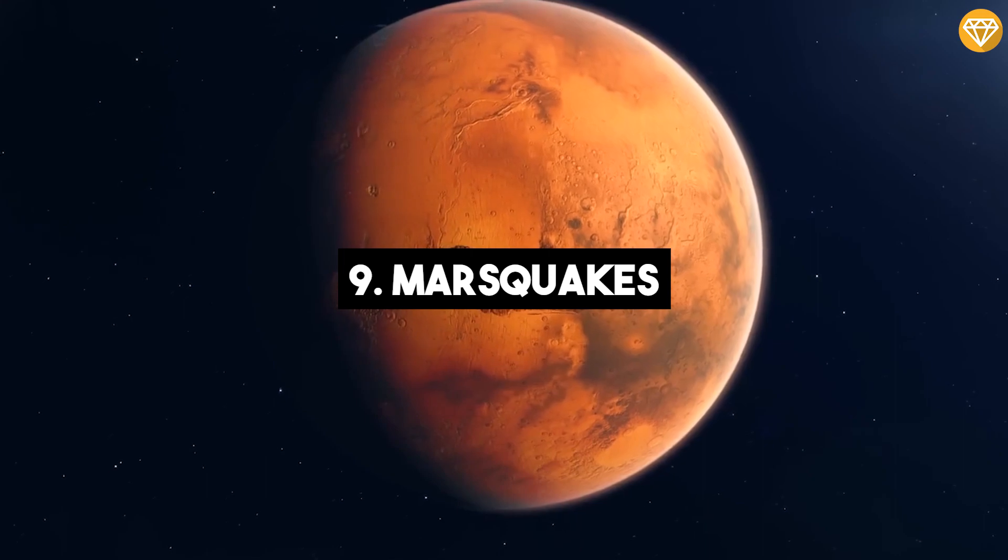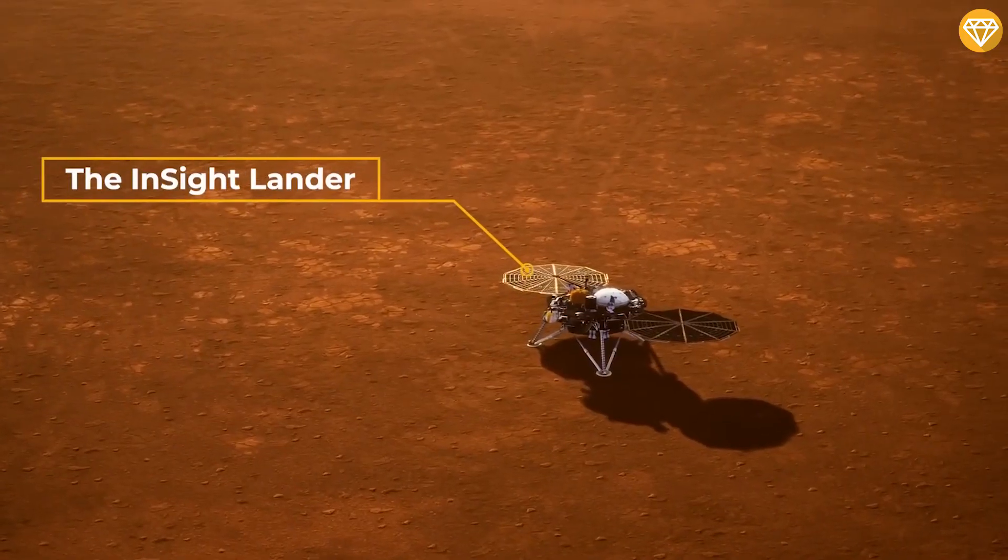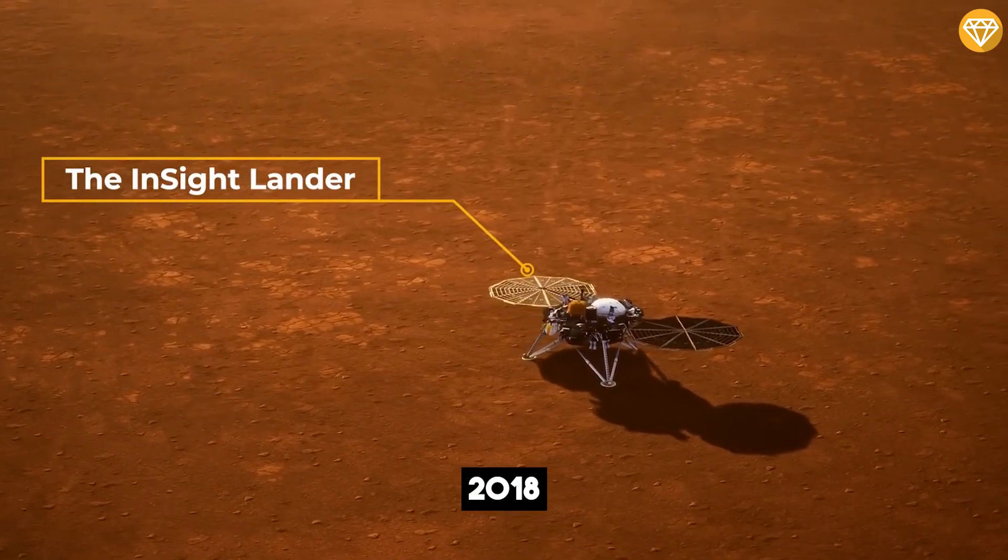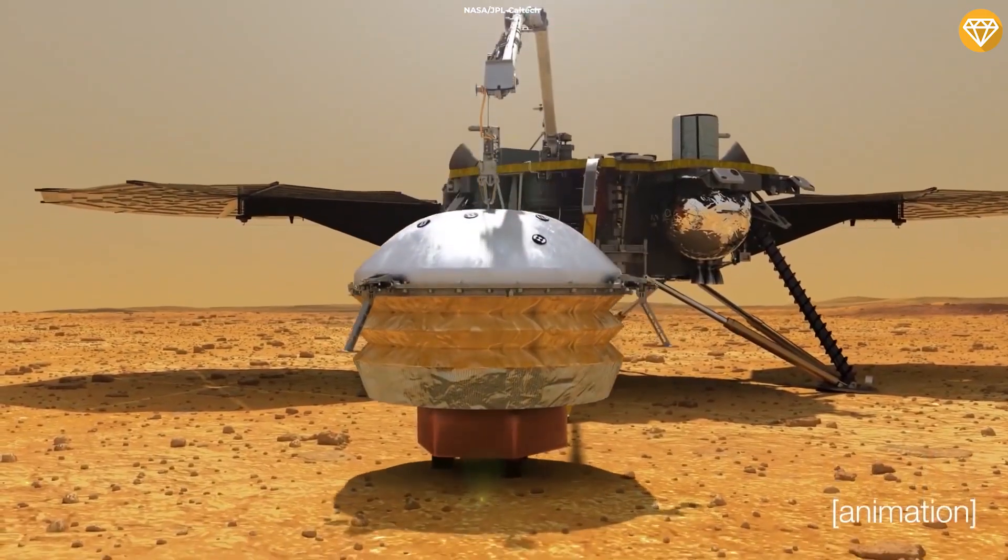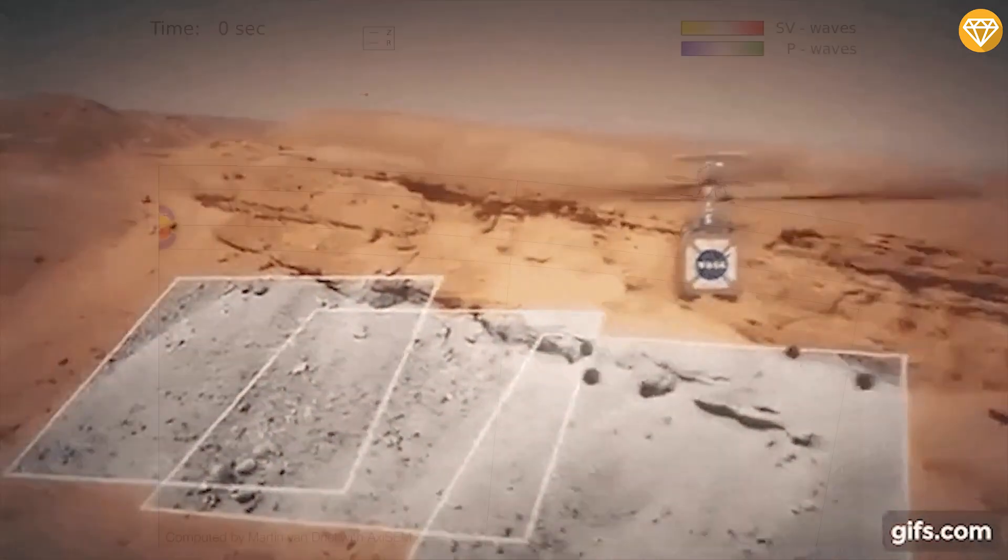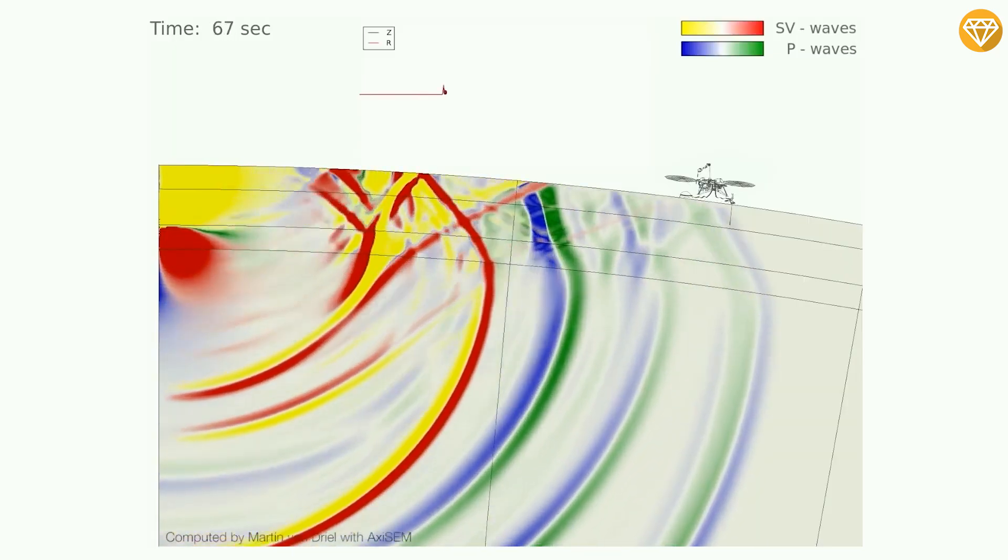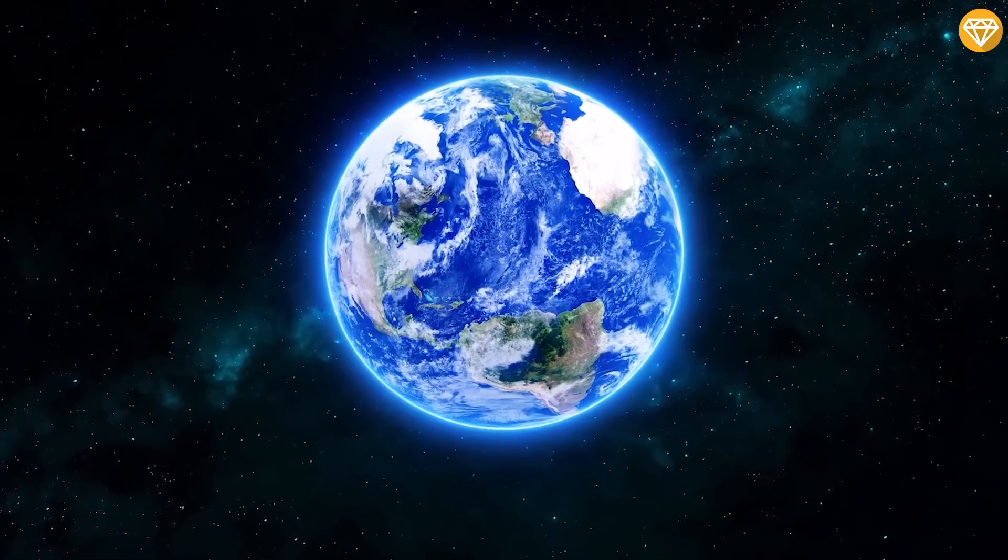Number 9: Mars Quakes. You've heard of earthquakes, now get ready for Mars quakes. NASA's InSight lander launched in 2018 has measured three separate quakes on the red planet. On September 18, 2021, on its thousandth day on Mars, InSight measured a 4.2 tremor that lasted for an hour and a half. The average quake on Earth only lasts for about 30 seconds.